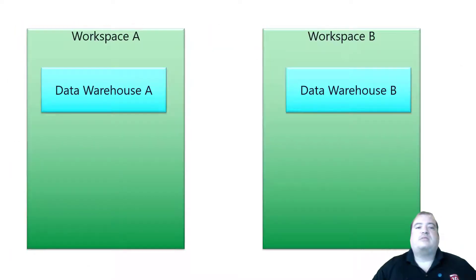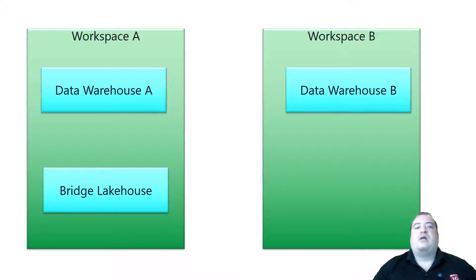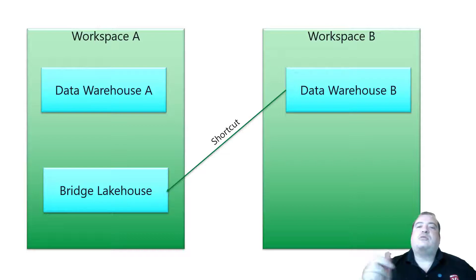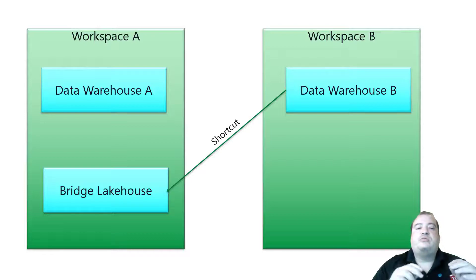Let's imagine we have Workspace A and Workspace B, with a data warehouse in each. We create a bridge lake house in Workspace A. This bridge lake house can make a shortcut to the data warehouse in the other workspace. Since the data warehouse A and the bridge lake house are in the same workspace, they can access each other. In this way, we use a bridge lake house to enable cross-object access.